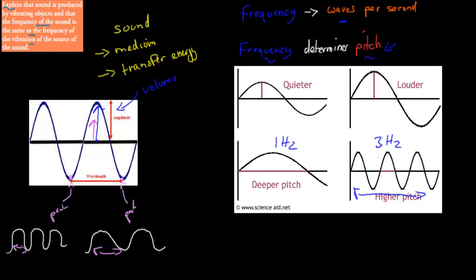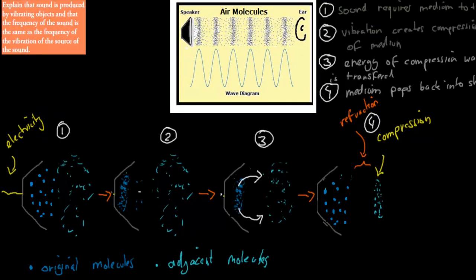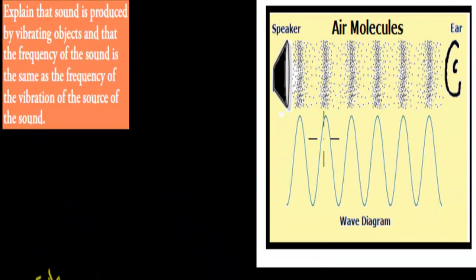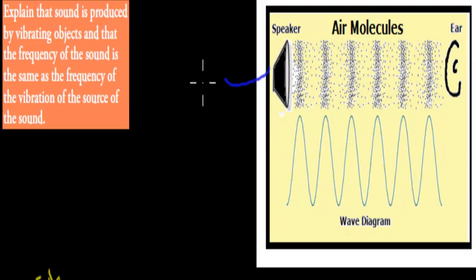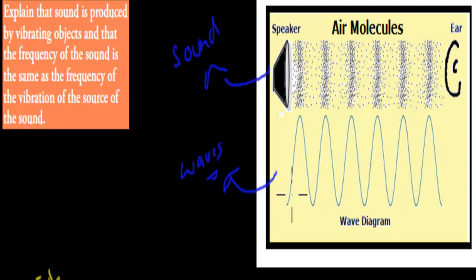So if we talk about how sound actually gets produced — the production of sound — you often see two diagrams when talking about sound. You see this kind of diagram showing sound production with compressions, and you also see these kinds of waveform waves. Both of these are examples, more or less, of sound.